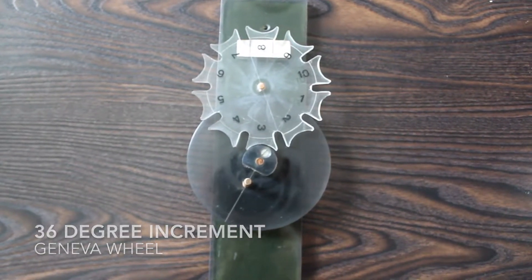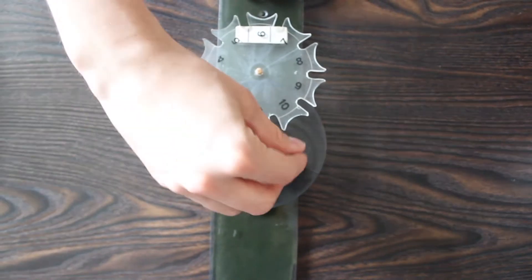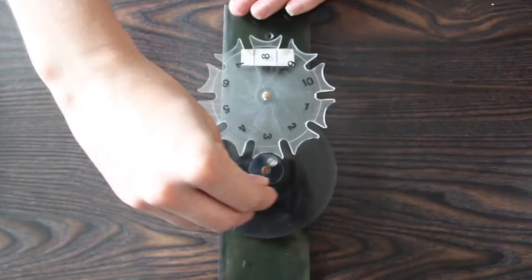This last wheel has extremely small increments of 36 degrees but is still similar in design to the first two wheels.